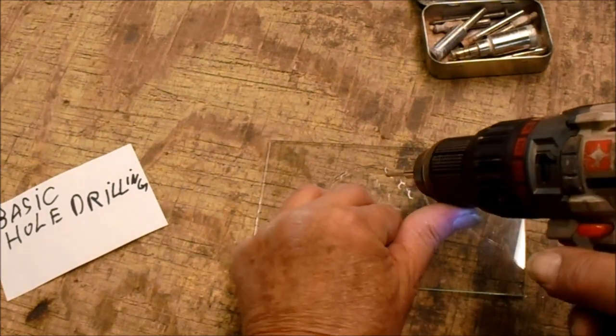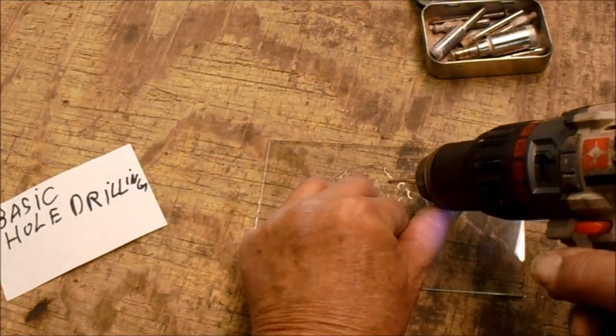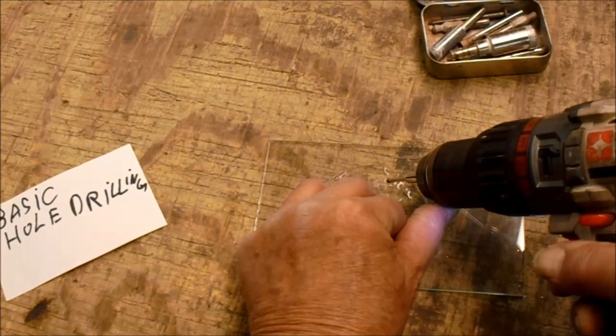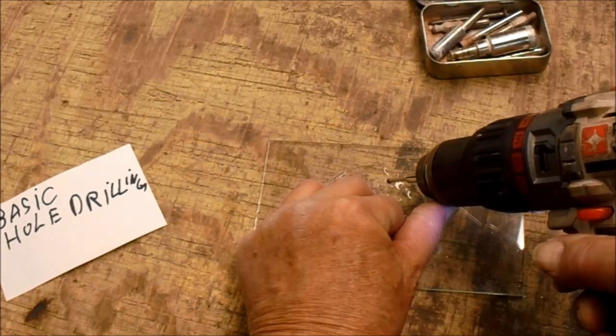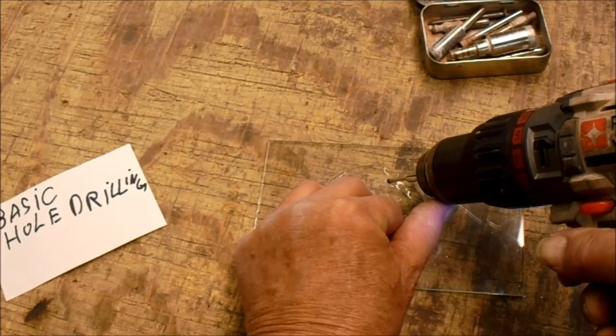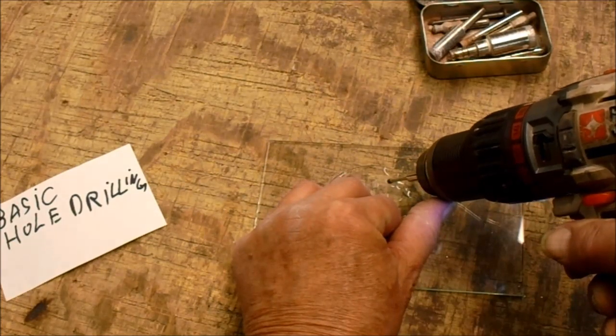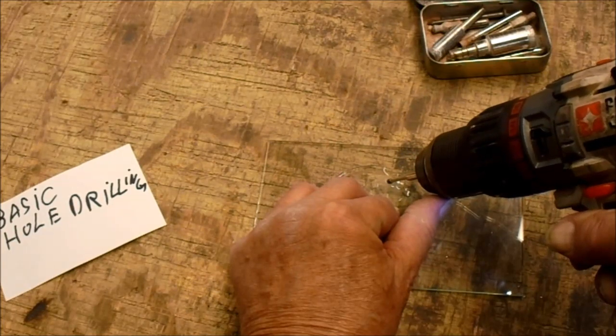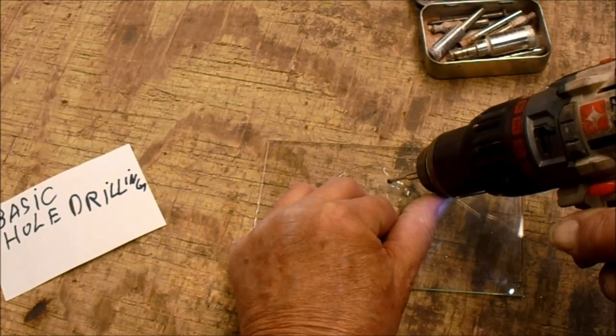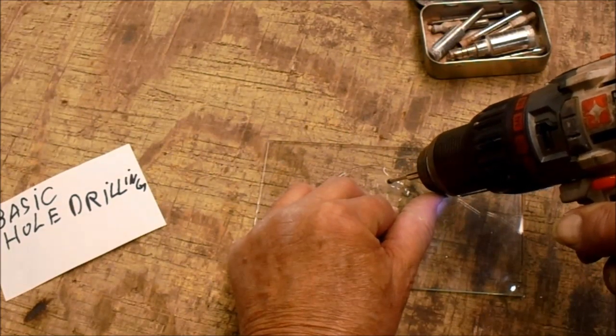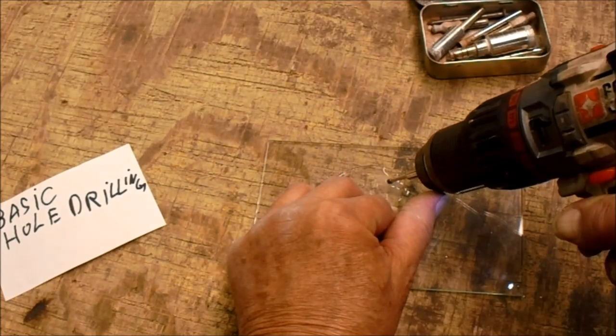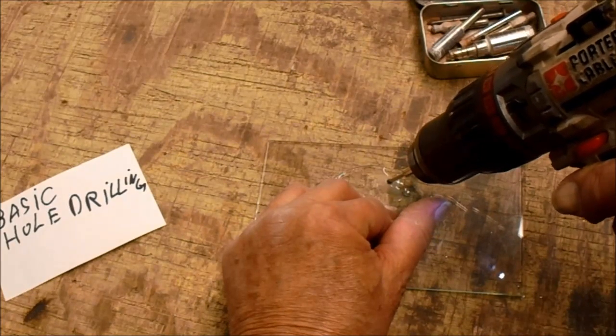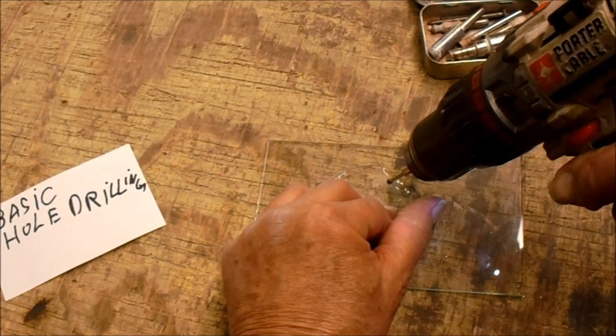Because it'll wander, you have to start it at an angle. If you're drilling through thin glass like this, once it starts to seat - because it has an abrasive around the tip of the drill bit - it'll eat into the glass so you can slowly stand it up.